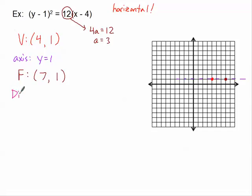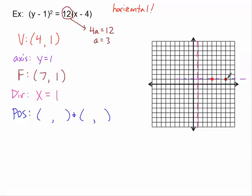Now let's find the directrix. Since the focus is 3 units to the right of the vertex, the directrix is 3 units to the left — I'll dot it in. It's the equation of a vertical line: x equals 1. For the points of symmetry, once I'm at my focus I count 2a units away — in this case up and down. Since a is 3, 2a is 6, so I count 6 units up and 6 units down from the focus.